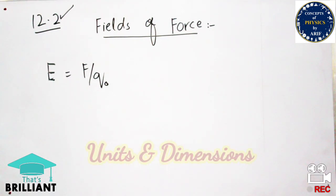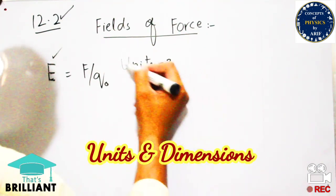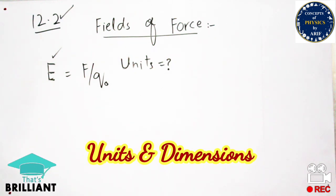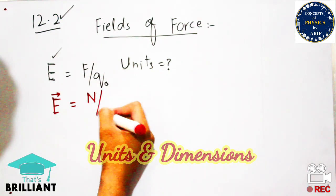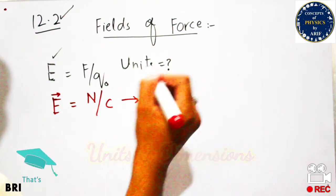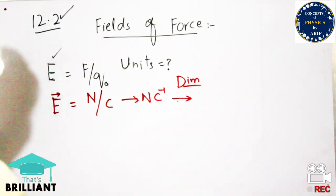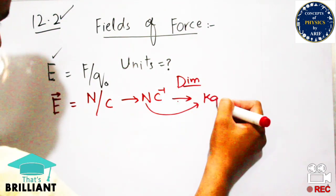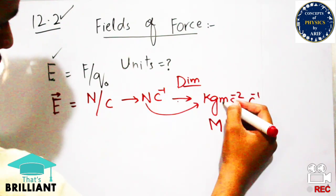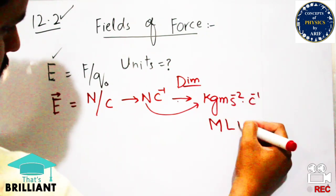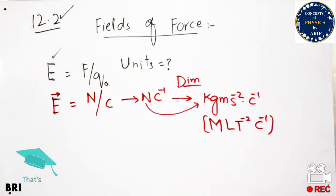The units and dimensions of electric field are very important. From the formula E equals F over q, the unit of force is newton and the unit of charge is coulomb, so the units of electric field are newton per coulomb, or newton coulomb-inverse. The dimension comes from newton per coulomb: kilogram times meter per second squared per coulomb, giving dimensions M L T⁻² times charge⁻¹.